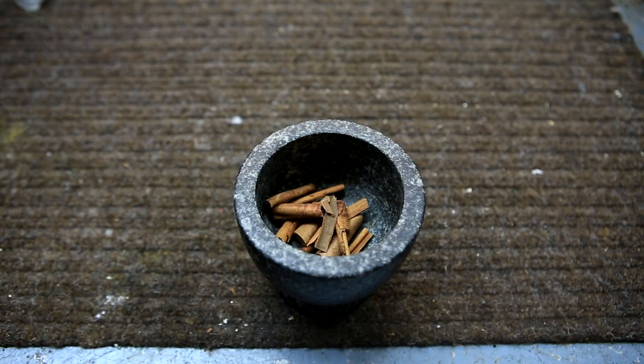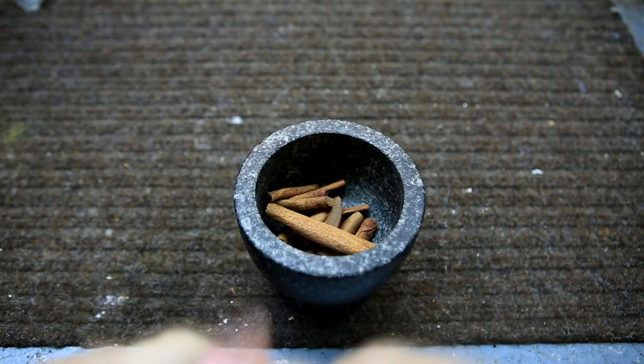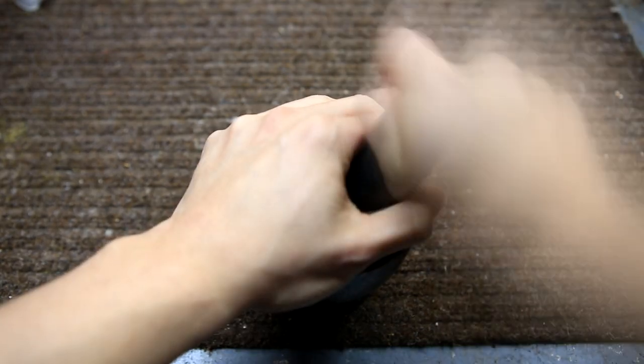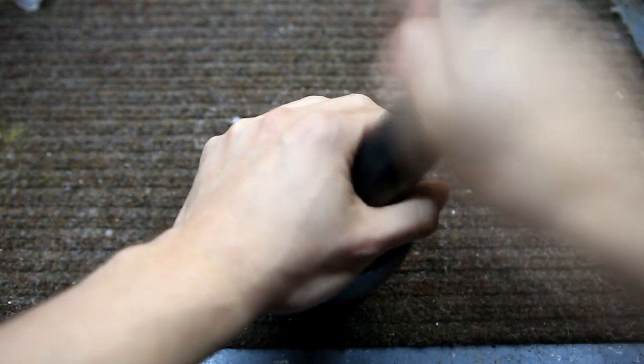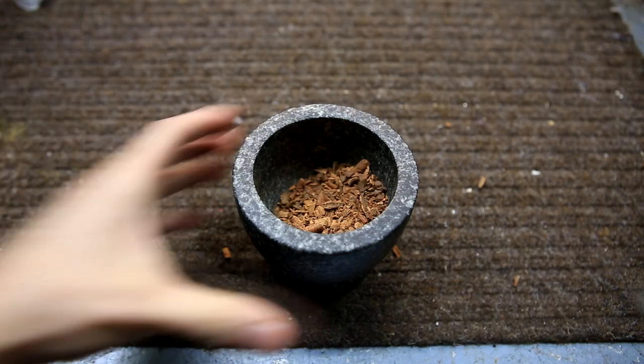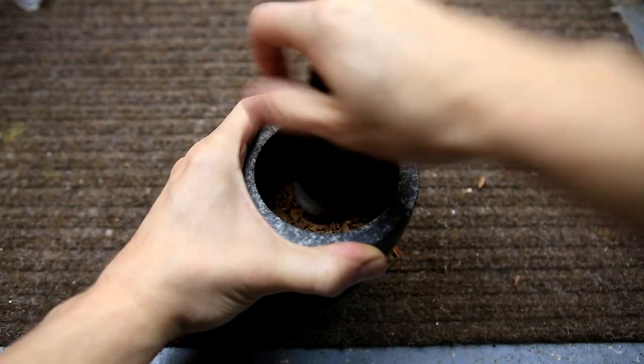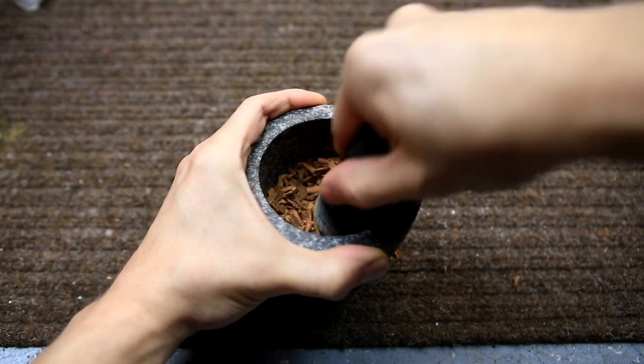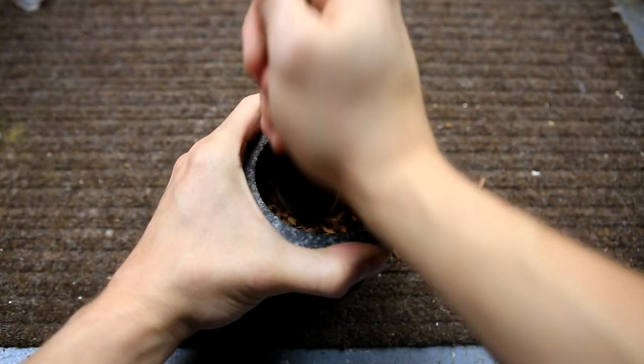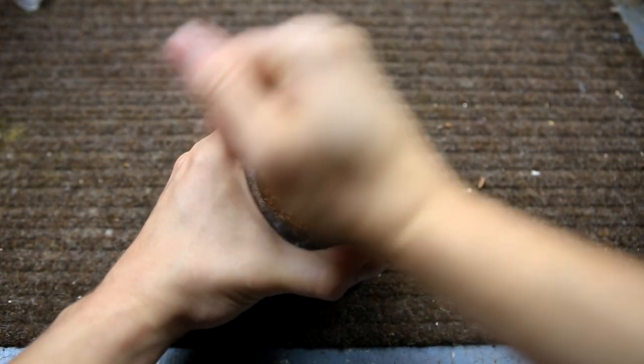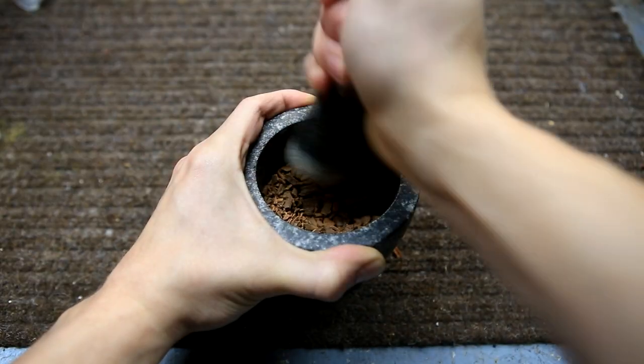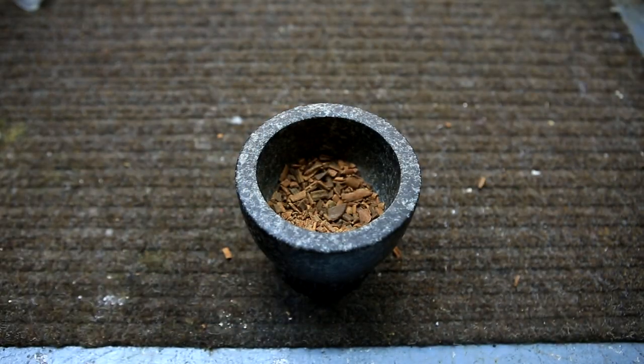Cinnamon sticks are broken into smaller pieces and placed into a mortar. Using the pestle, the pieces are crushed into smaller bits. Keeping the bits moderately sized and not powderizing them keeps the foaming during the distillation to a minimum. If powdered cinnamon were used, we might need to use a surfactant in order to prevent the foam from reaching the still head.